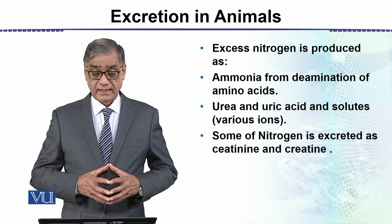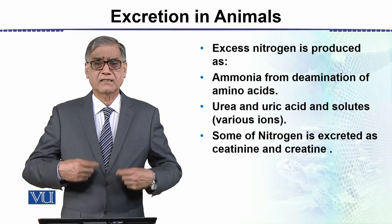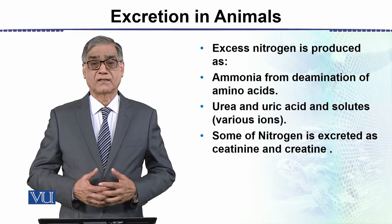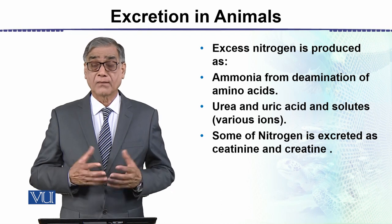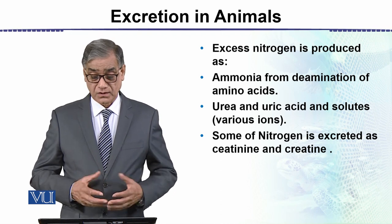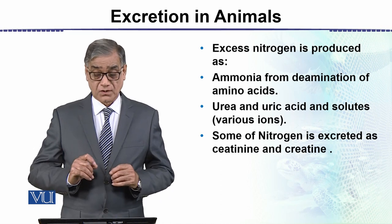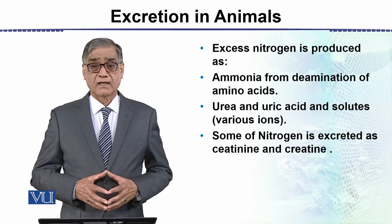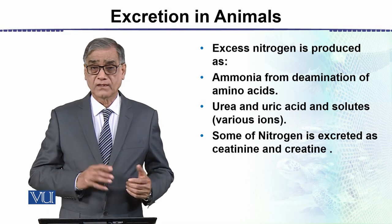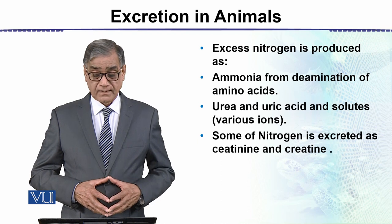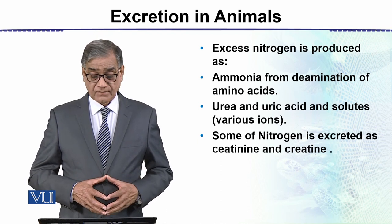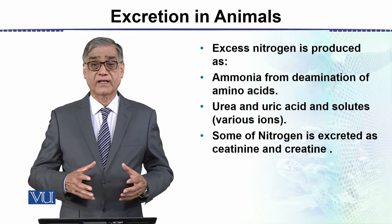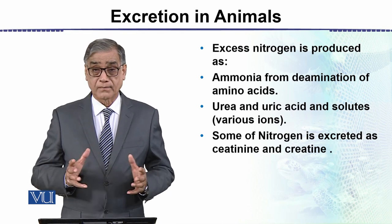Excess nitrogen is produced from the metabolism of proteins, forming nitrogenous products. These nitrogenous products may be ammonia, urea, or uric acid. Ammonia comes from the de-amination of amino acids — amino acids contain an NH2 (amino) group, and its removal leads to ammonia, then urea and uric acid. Some nitrogen is also excreted as creatinine or creatine, which are complex nitrogen-containing compounds.